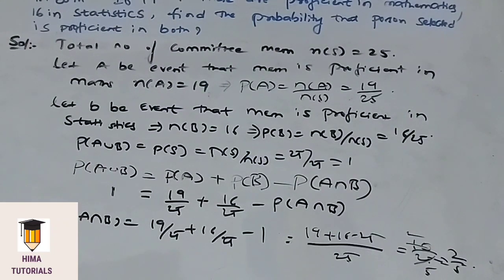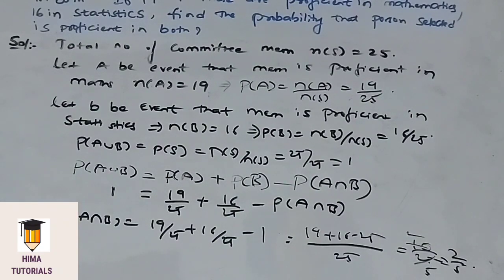That means the probability that a person selected is proficient in both is 2 by 5. I hope it is clear. Please make a note of it.